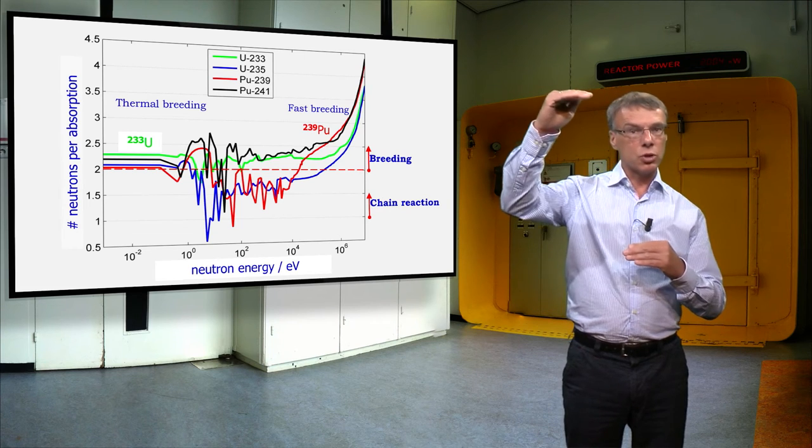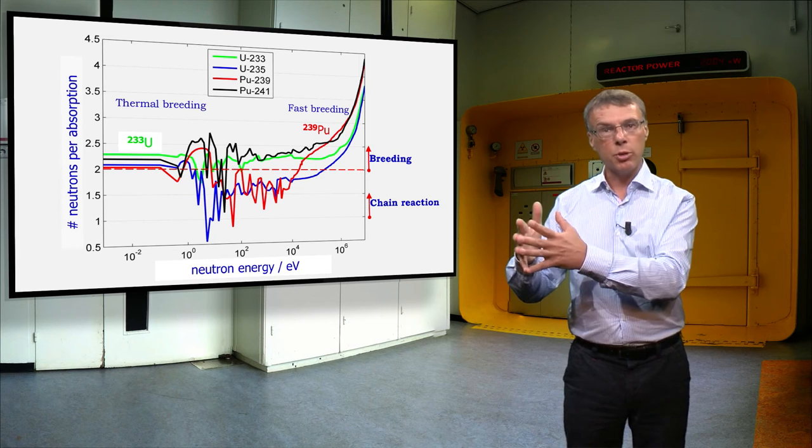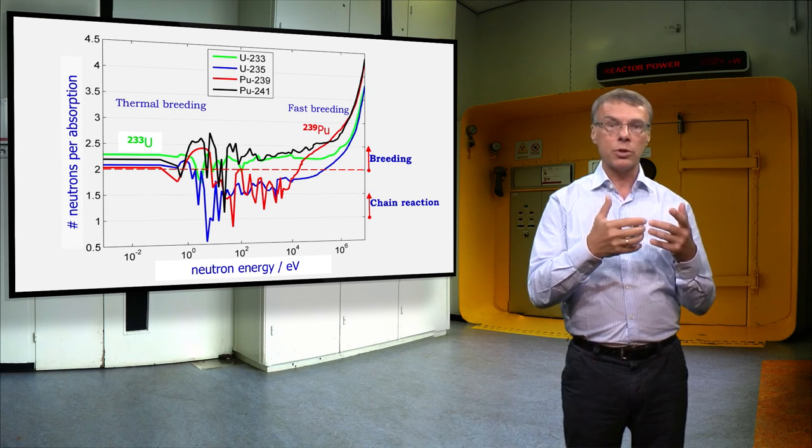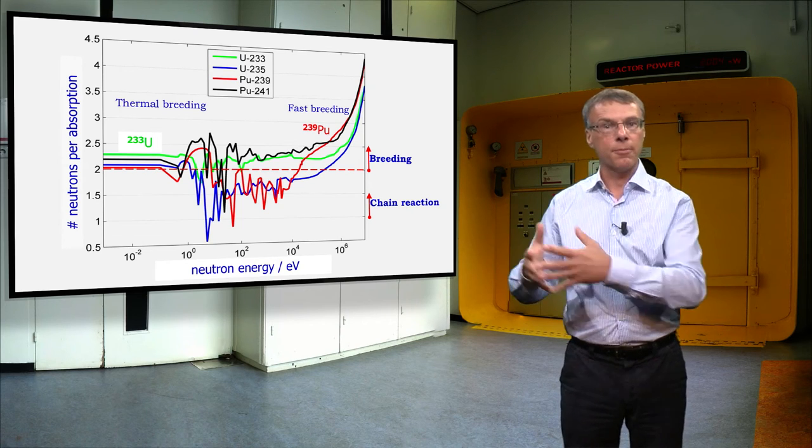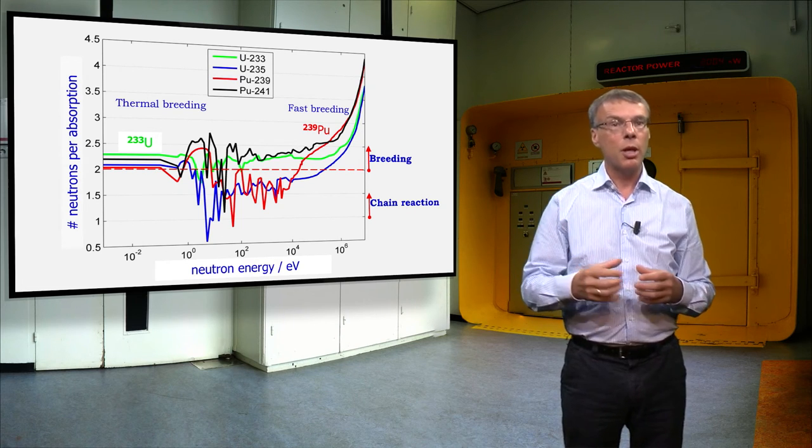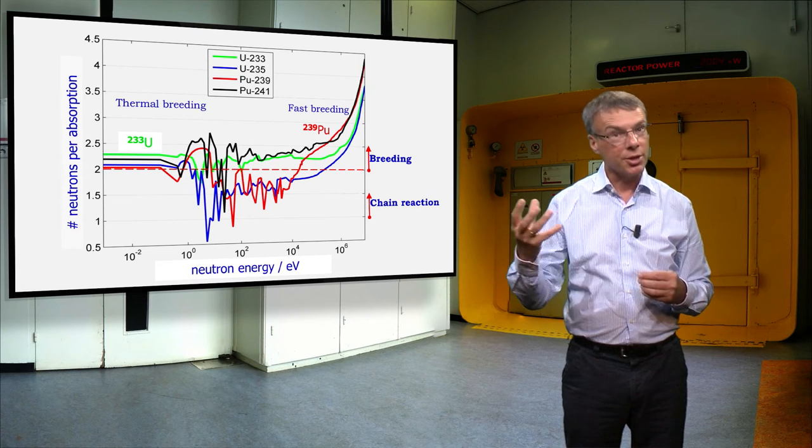If the line is above 2, there is one neutron left to convert uranium-238 into the fissile plutonium, or to convert thorium-232 into fissile uranium-233. In principle, breeding is possible then, meaning that the number of fissile isotopes in the fuel increases.